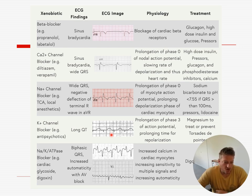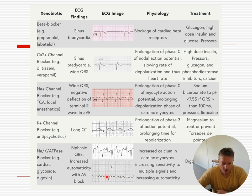Digoxin can cause patients to go fast — in which case they often get a biphasic, weird-looking QRS complex — or they can be slowed down with increasing AV block and go into complete heart block.